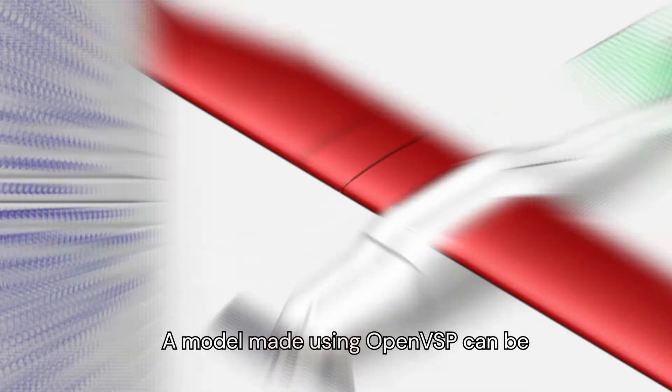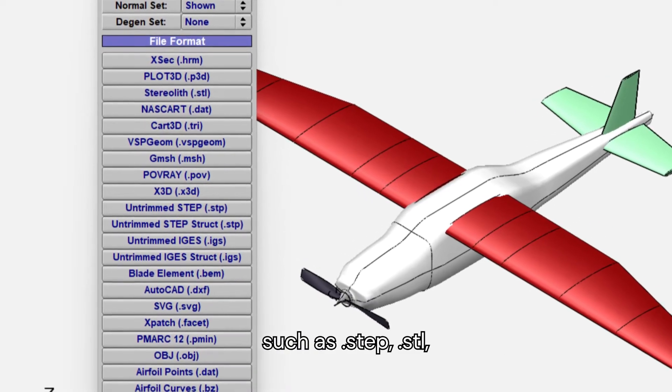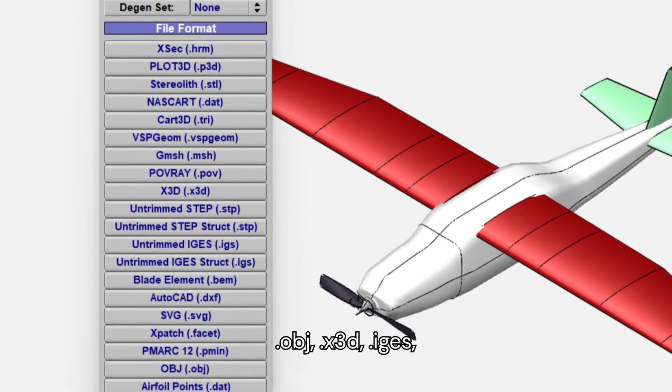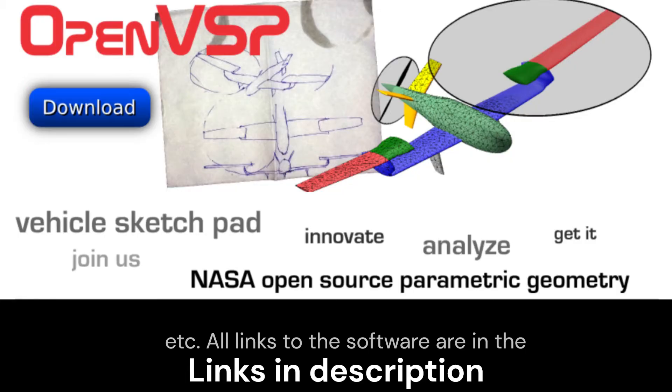A model made using OpenVSP can be exported into various popular formats such as .step, .stl, .iges, .x3d, and others. All links to the software are in the description.